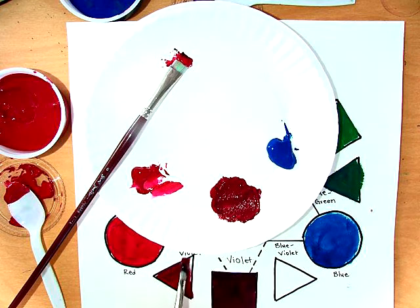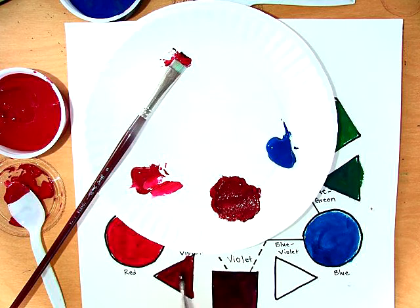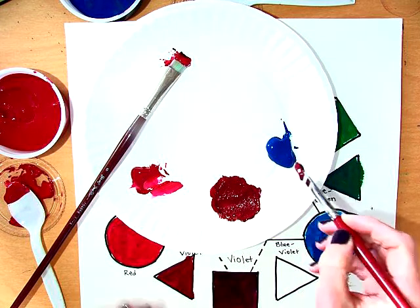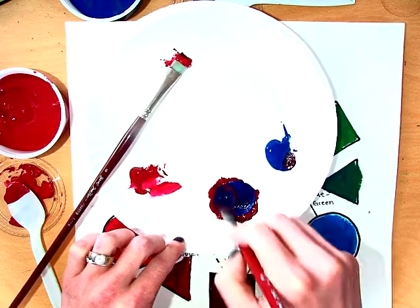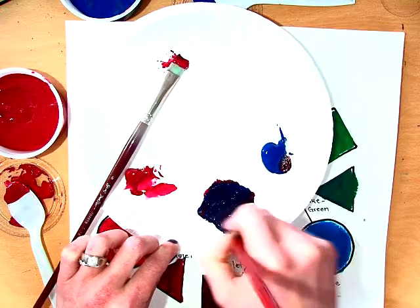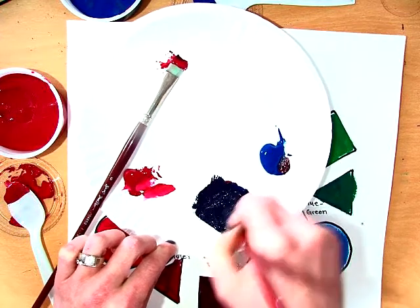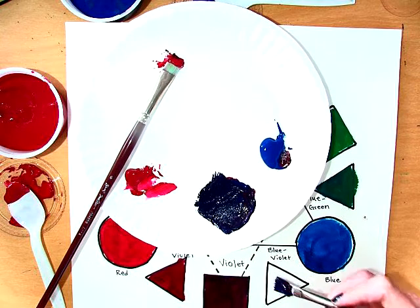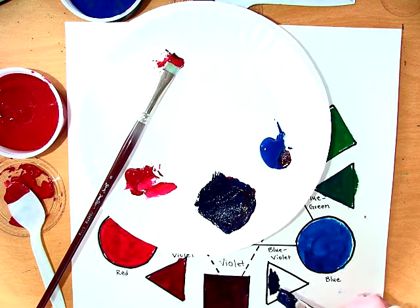And then the blue violet will be really easy because I just need to take a little bit of blue. I could even use a lot of blue so that it's really dark - it's going to be that dark indigo kind of color. That's going to go right here. Paint that in carefully.